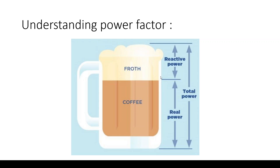In one sense, you can think of the power factor as the efficiency of a power distribution system. The more real power you have in a system, the higher the power factor, and the more of the absorbed power is being utilized. The less the power factor, the less efficiency in the power distribution, the more reactive power — or froth in this analogy — is being wasted. This wasted power can take many forms, such as heat energy. So in its most basic form, power factor is the efficiency of power distribution in an electrical system.